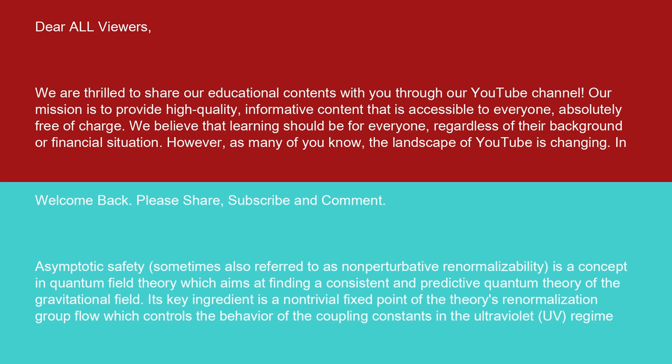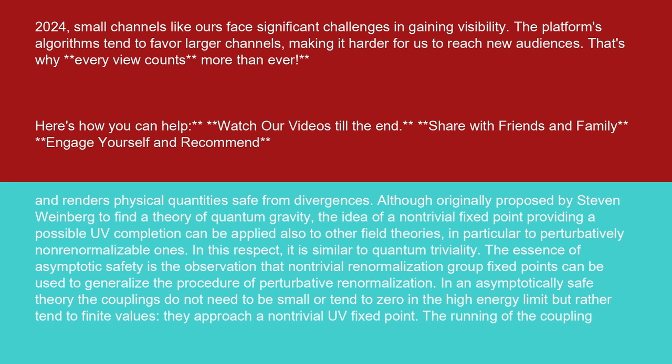Asymptotic safety, sometimes also referred to as non-perturbative renormalizability, is a concept in quantum field theory which aims at finding a consistent and predictive quantum theory of the gravitational field. Its key ingredient is a non-trivial fixed point of the theory's renormalization group flow which controls the behavior of the coupling constants in the ultraviolet UV regime, and renders physical quantities safe from divergences. Although originally proposed by Steven Weinberg to find a theory of quantum gravity, the idea of a non-trivial fixed point providing a possible UV completion can be applied also to other field theories, in particular to perturbatively non-renormalizable ones.